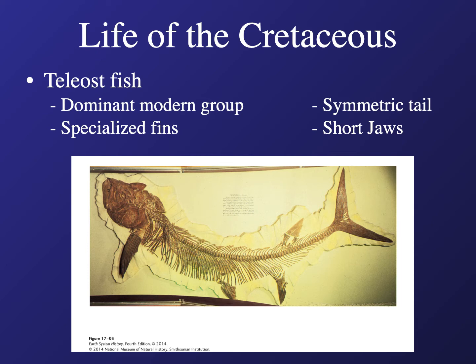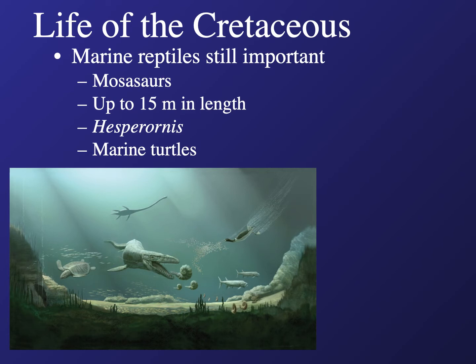Let's look at life in the Cretaceous oceans. A lot had changed, but some things remained the same. Marine reptiles were still really important, like the Mosasaurus — things were huge, up to 15 meters in length. There were marine turtles swimming about, and we still had ammonites. The oceans probably looked pretty similar to the Jurassic, with giant marine monsters down there.